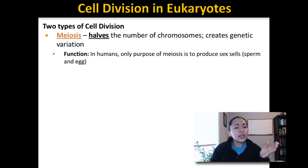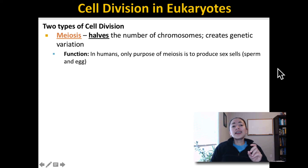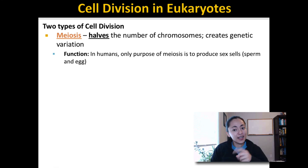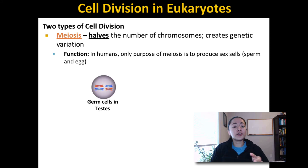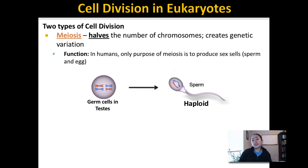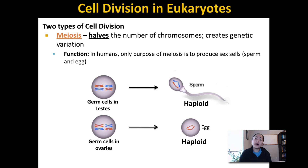Do you remember what type of cells become sperm and eggs? The cells that become sperm and eggs are diploid cells called germ cells, found in your ovaries and your testes. So in males, diploid germ cells in their testes become haploid sperm cells. And in females, diploid germ cells in her ovaries become haploid egg cells.